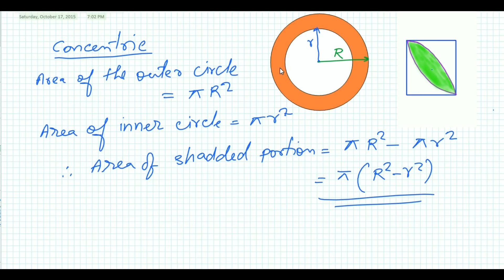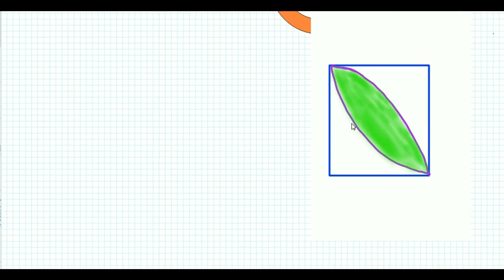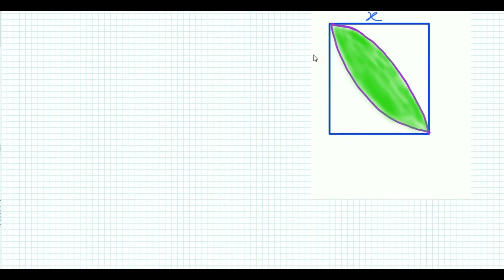Similarly, I want to clarify the basics of this second figure as well. After that I will deal with sums relating to both basics. Here we will find the area of this shaded portion. Suppose this is a square of side x.